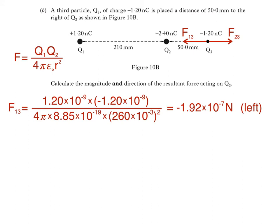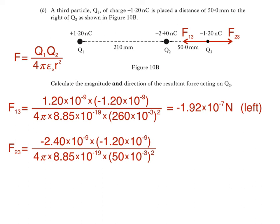For force F23, we do the same thing, except the charges are negative 2.4 nC and negative 1.2 nC, separated by a distance of 50 mm, giving us 1.04 times 10 to the negative 5 N to the right.